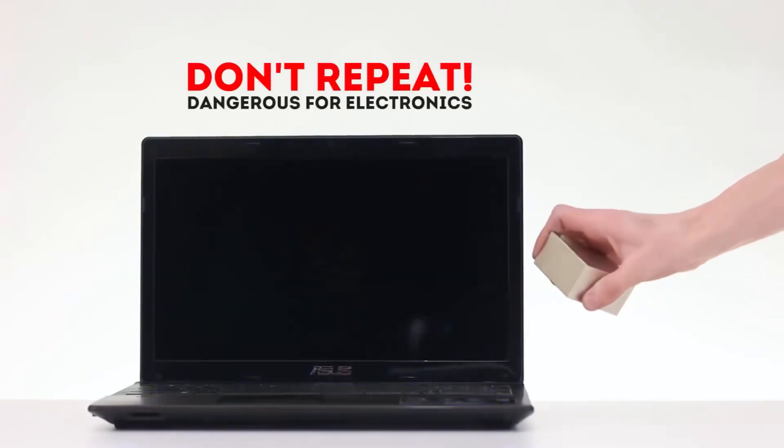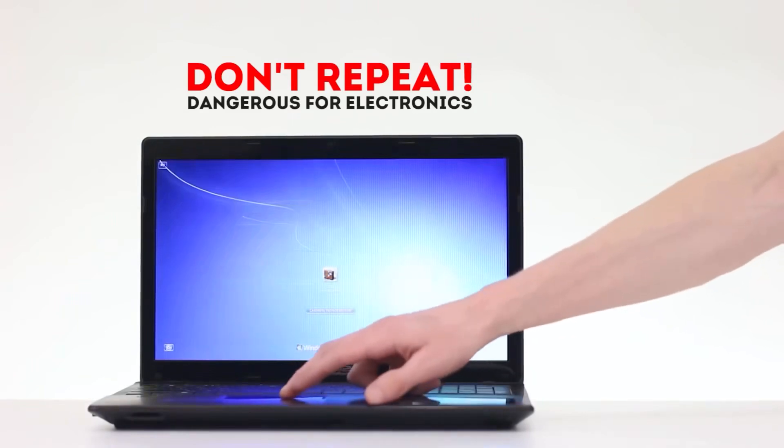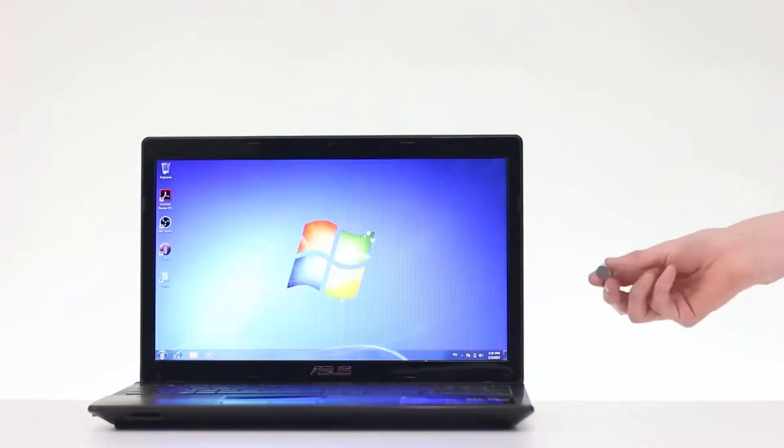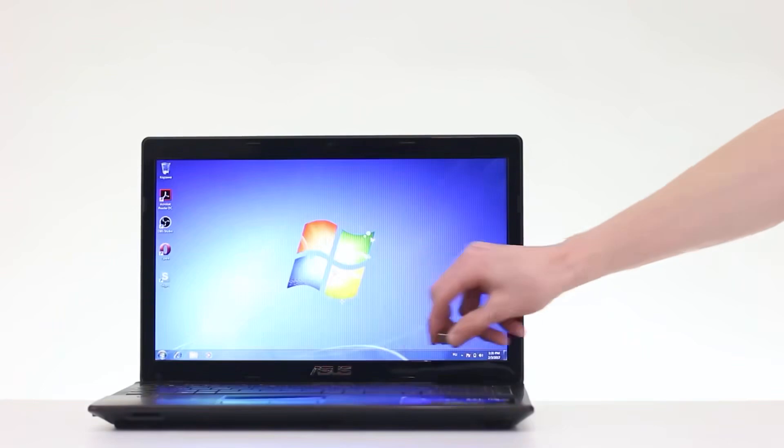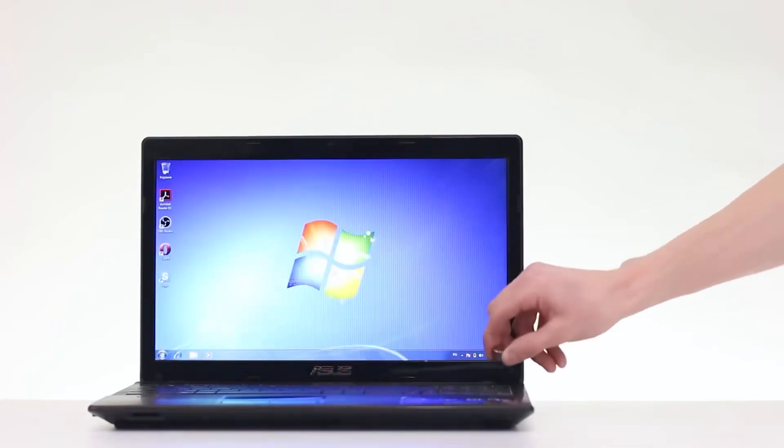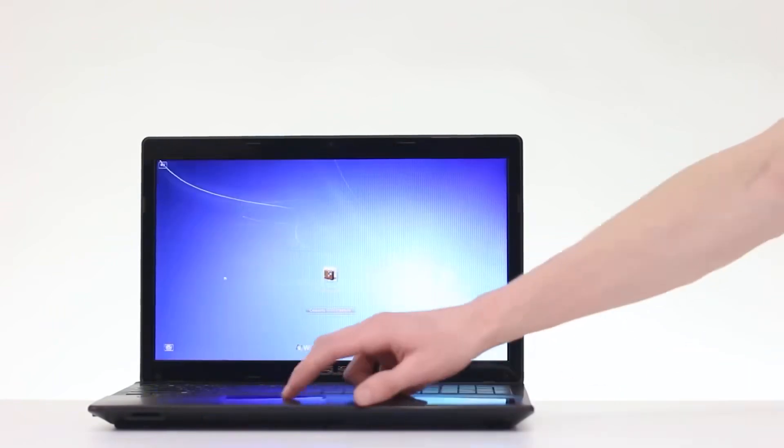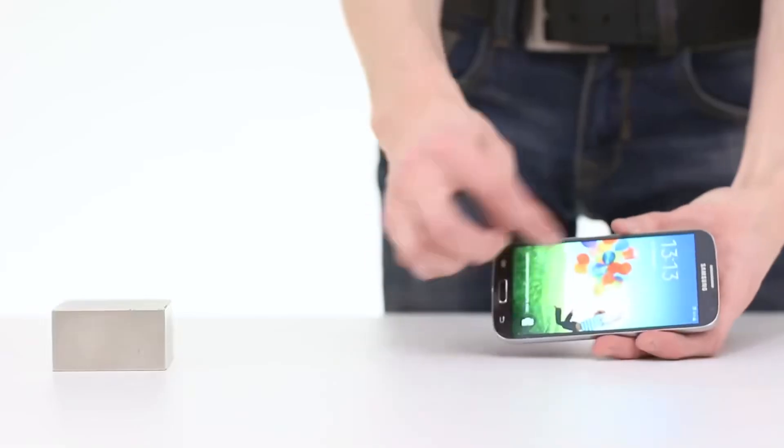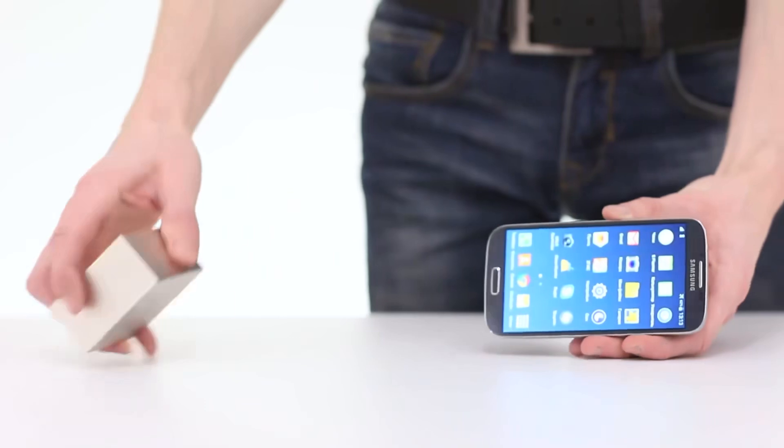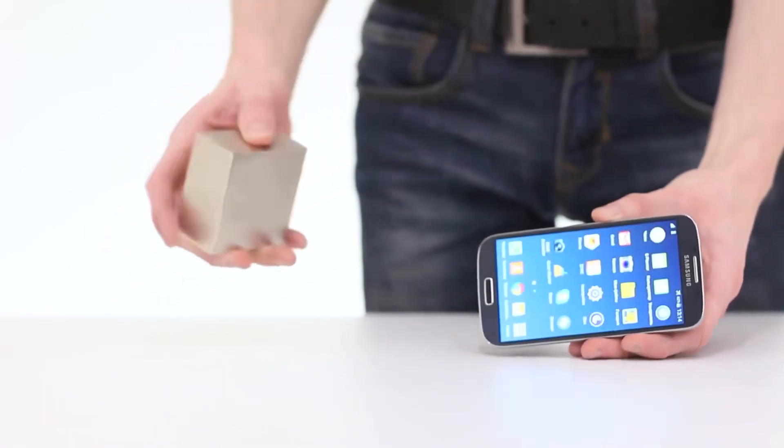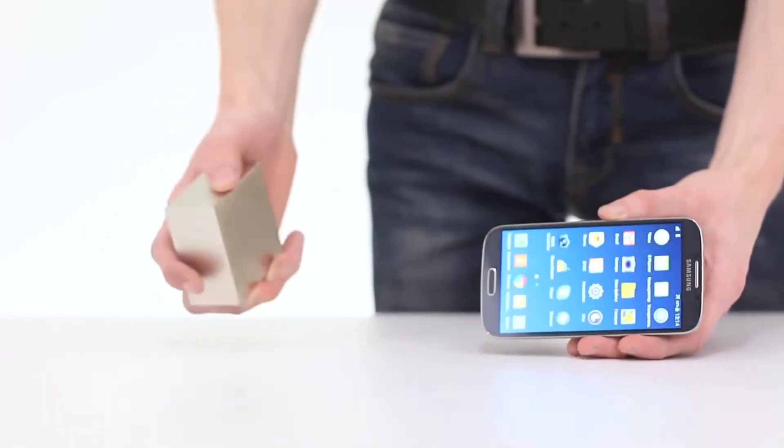We do not recommend repeating this trick at home. We will bring the magnet to the laptop screen and it immediately goes out. Even a small magnet is enough. But remember that it can end badly for technology. Mysterious things also happen to a smartphone when a magnet approaches. The screen goes out and lights up again.